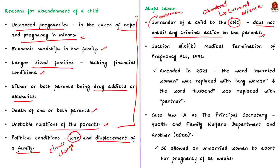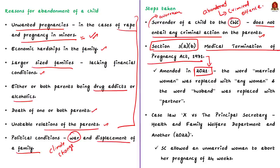The second step is the government enabling medical termination of pregnancy. One of the reasons for abandoning a child is unplanned pregnancy, so the government has simplified the medical termination of pregnancy in India. Section 3, clause 2, sub-clause B of the Medical Termination of Pregnancy Act 1971 was amended in 2021, and the word 'married woman' was replaced by 'any woman' and the word 'husband' was replaced by 'partner.' This amendment paved the way for termination of pregnancy for single and unmarried women.